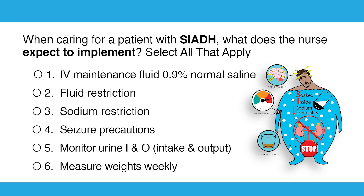Option one: IV maintenance fluid, normal saline? No — we stopped urine out, so we stopped fluid in; we don't want to add to that swelling. Option two: fluid restriction — yes, since we stopped urinating, we stopped fluid in. Option three: sodium restriction? No — we have low sodium in SI, very low liquidy labs, we need to add sodium. Option four: seizure precautions — yes, we have seizures with cerebral edema from that low sodium. Option five: monitor strict I's and O's — definitely yes, always for both SI and even DI.